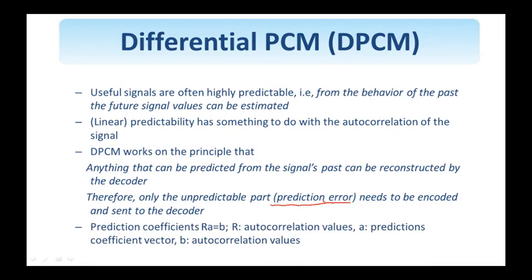As we will see, the prediction coefficients denoted by A will be the result of solving a set of equations called the normal equations, which relate autocorrelation values to the linear prediction coefficients. Let's see the structure of the predictor, encoder, and decoder, and also derive these so-called normal equations.